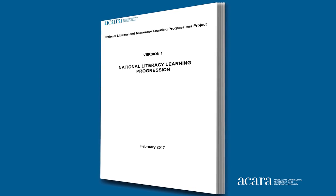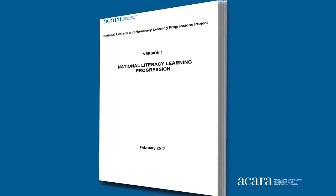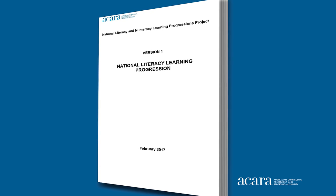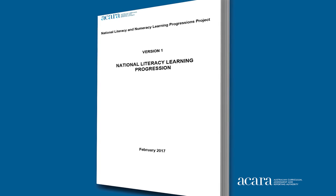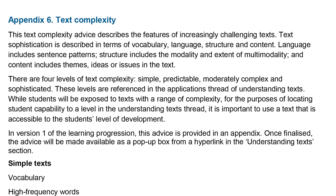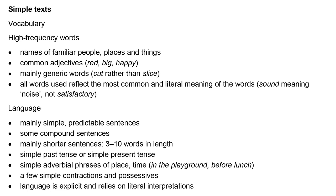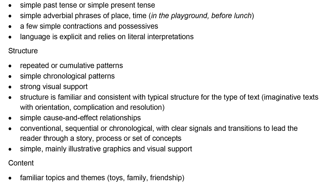Increasingly sophisticated understanding of texts is influenced by the complexity of the texts being read. Text complexity advice is provided at Appendix 6 in the PDF version of the progression. It describes the features of increasingly sophisticated texts, such as the topic or subject of the text, the vocabulary or the types of language features. It is intended that the understanding texts thread be read in conjunction with this advice.